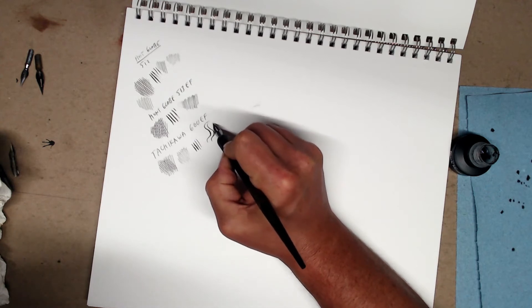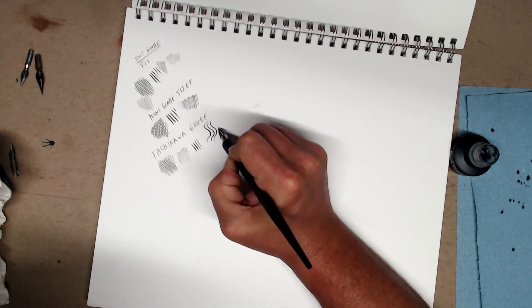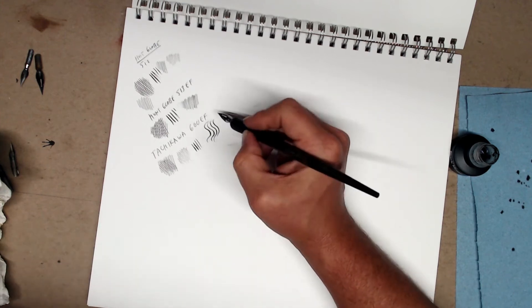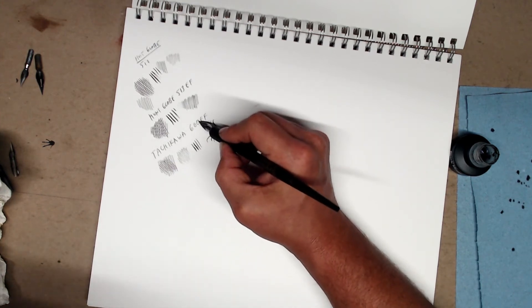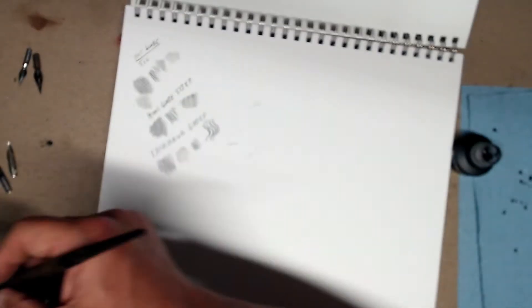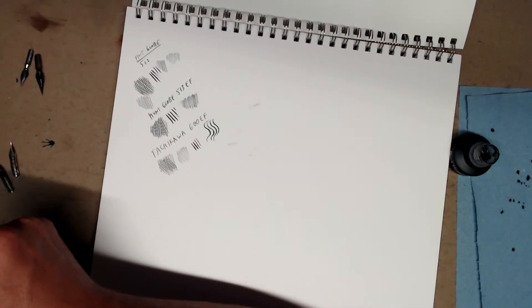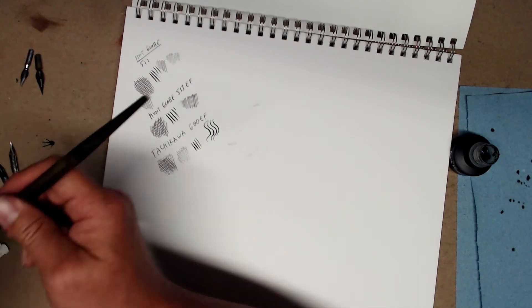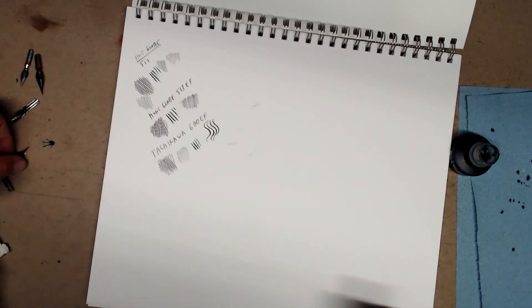Look at that line variation. Again, this is the main advantage of the dip pen. You can go from thin to thick. You show me a single marker that does that. You won't be able to find it. So this is the Tachikawa 600EF. One of my favorite pens. I think it's often used in Manga. Really good nib.